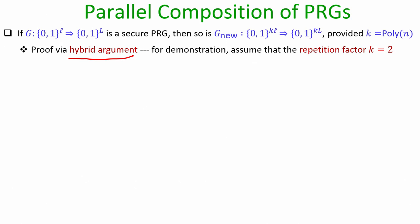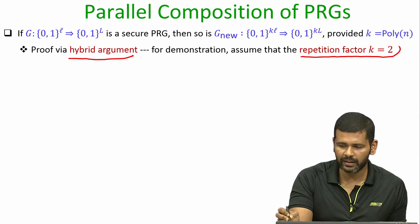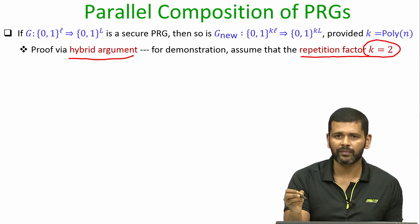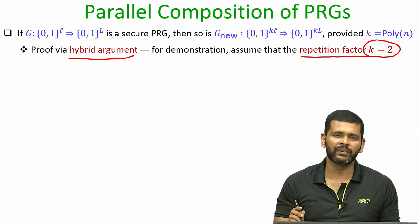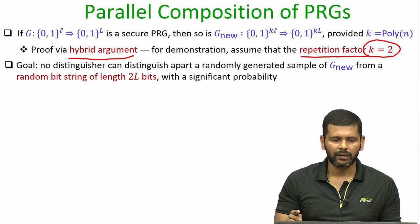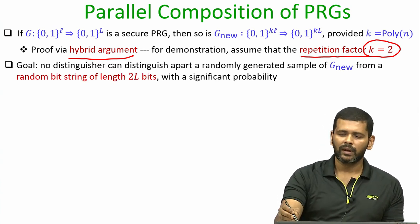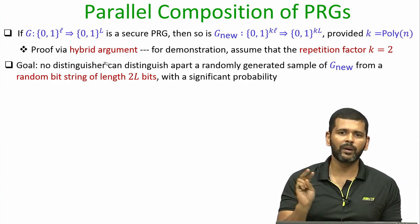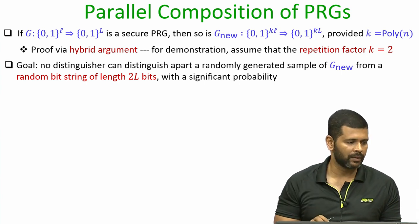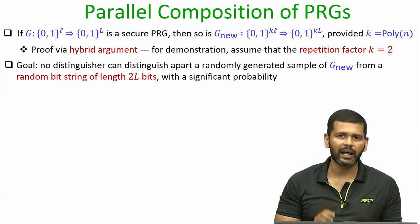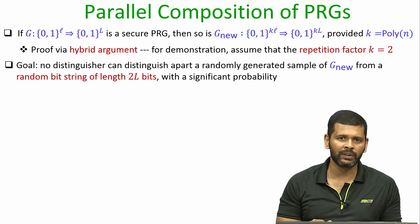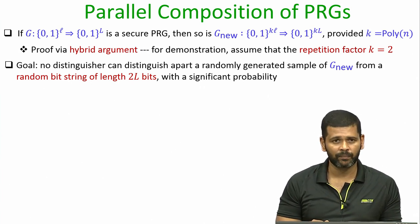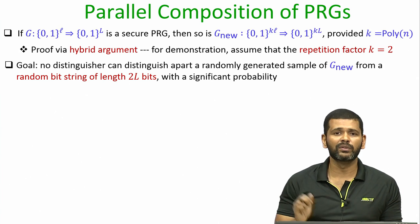To demonstrate the hybrid argument, we consider the repetition factor k equal to 2 for simplicity; later we will see the generic case where k is any polynomial function of the security parameter. With k=2, algorithm G_new consists of two independent parallel copies of algorithm G, and we want to prove G_new is a pseudo random generator using the indistinguishability-based definition.